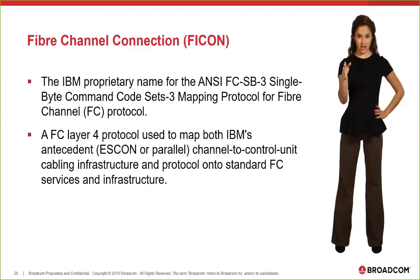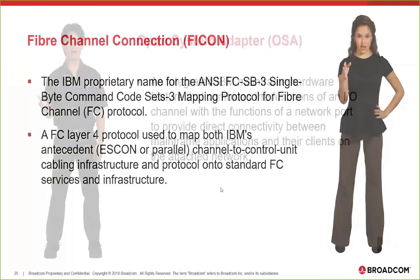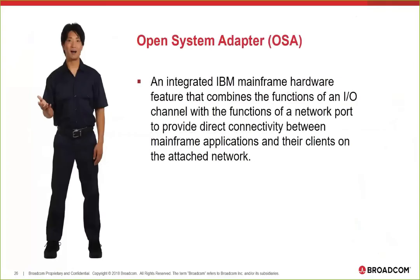FICON — fiber channel — there's still some legacy ESCON. These are the channels for storage, so mainframe communication channels or I/O out to storage and back. ESCON was parallel, kind of 1980s; fiber channel or FICON came out in the early 90s. If you hear FICON, that's storage I/O or a communication channel. The other one is OSA — essentially a NIC card for the mainframe, a network interface card.